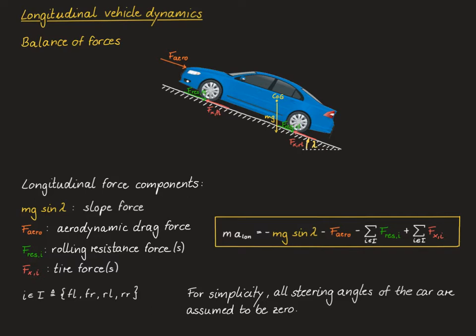For simplicity of the following presentation, we assume that all steering angles of the car are equal to zero. The first relevant force component is the slope force, and it's caused by the weight of the vehicle that attacks at its center of gravity, a fraction of which also pulls the vehicle in its longitudinal direction. This fraction is given by the sine of the slope angle lambda, so the total slope force is mg times the sine of lambda.